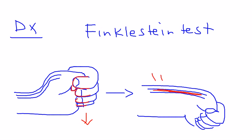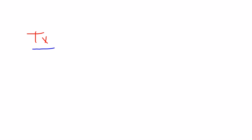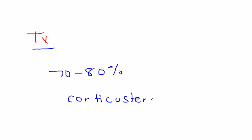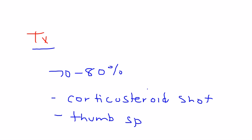That is the Finkelstein test. For treatment, the majority of cases — 70 to 80 percent — respond favorably to a corticosteroid injection, and also a thumb spica splint, which is a splint you can buy and wear to help relieve some of the pressure.